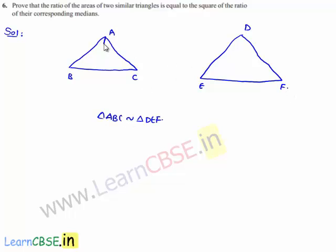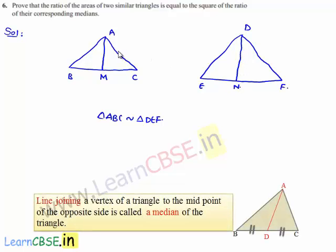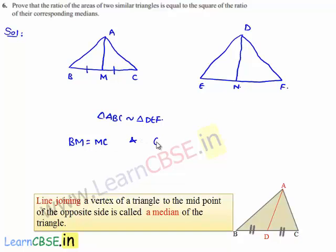Let us assume that AM and DN are the medians from A to M and D to N in triangles ABC and DEF respectively. Then in triangle ABC, BM is equal to MC, and in triangle DEF, EN is equal to NF.